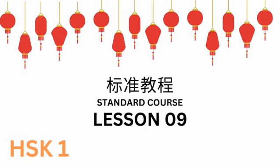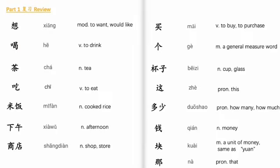HSK 1, Lesson 9, 第九课. 你儿子在哪儿工作? Part 1, 复习 Review. 词汇: 想, 喝, 茶, 吃, 米饭, 下午, 商店, 买, 个, 杯子, 这, 多少, 钱, 快, 那.